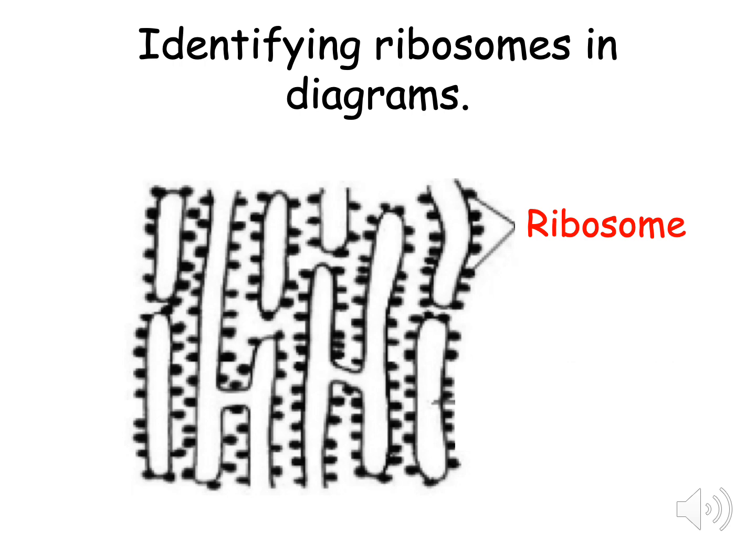Sometimes however it can be tricky to identify the ribosomes in a diagram. This is because the black dots can either float in the cytoplasm or they can be attached to a structure like the one in this PowerPoint slide. As long as you remember that the ribosomes are small black dots regardless of if they float by themselves or are parked on this structure here.